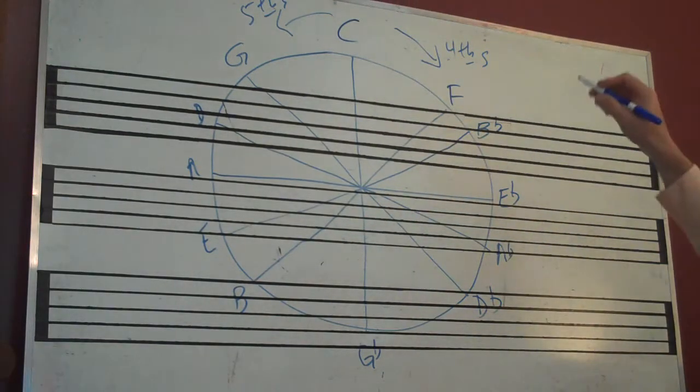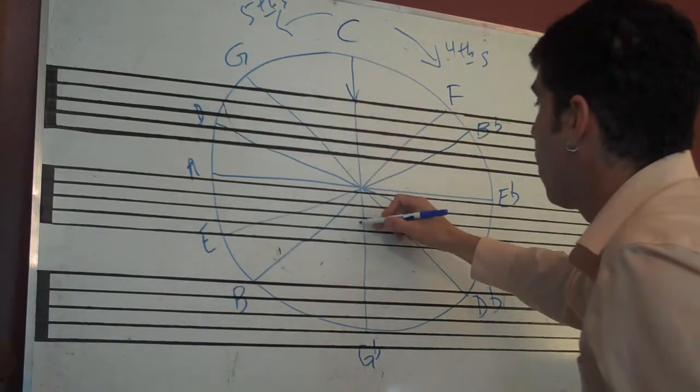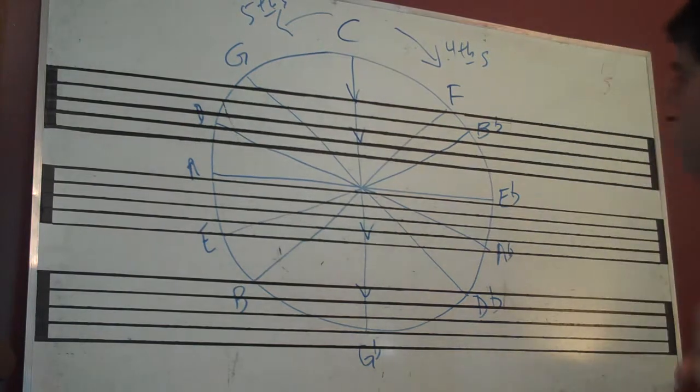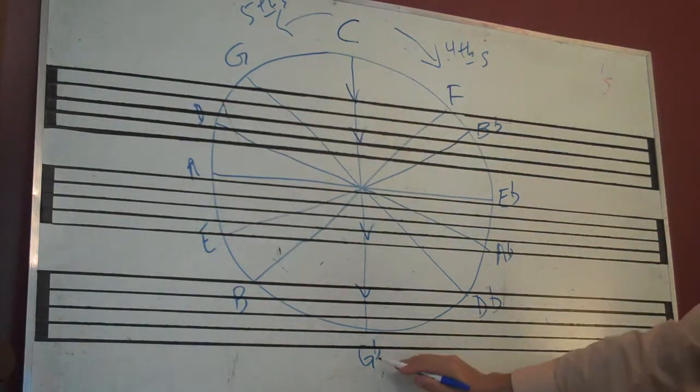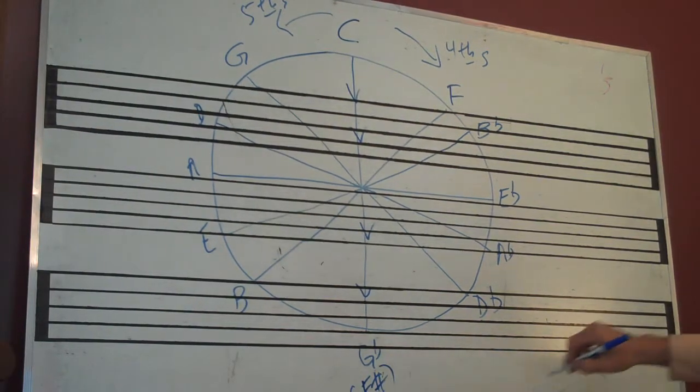What I want to talk about today is what is this across? What is the relationship of C to G-flat? We can call this F-sharp too. Same thing.